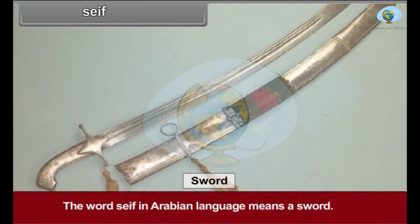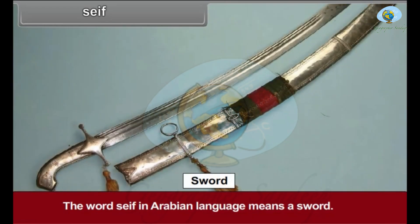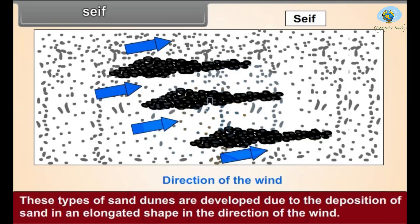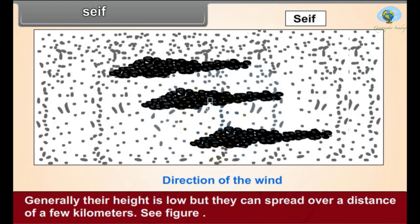Seif: The word 'seif' is Arabic for sword. These types of sand dunes are developed due to the deposition of sand in an elongated shape in the direction of the wind. Generally their height is low but they can spread over a distance of a few kilometers.